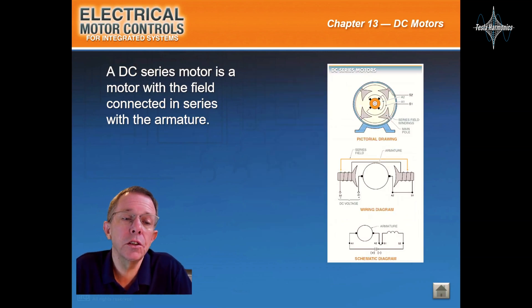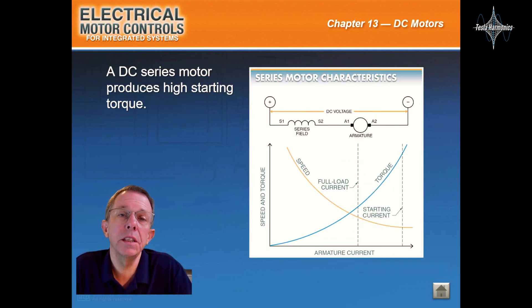A DC series motor is a motor with the field connected in series with the armature. A DC series motor produces high starting torque.